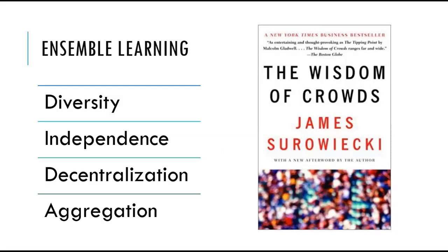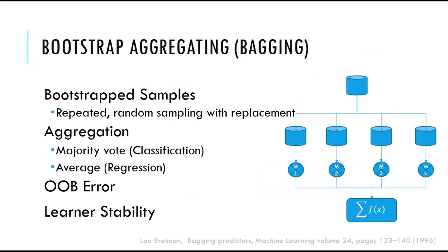How do these two intuitions come into play when we talk about machine learning models and their complexity? The first technique that we want to study is bootstrap aggregating, or bagging, proposed by Leo Breiman in mid-90s.